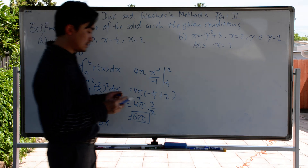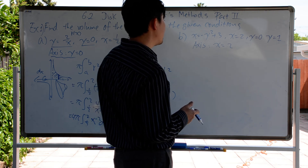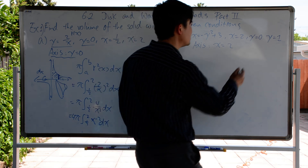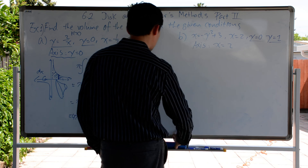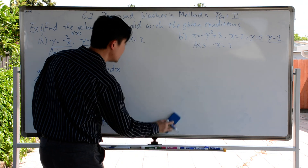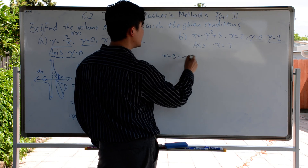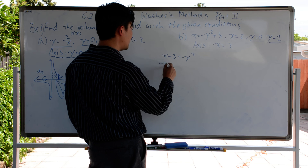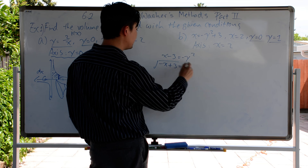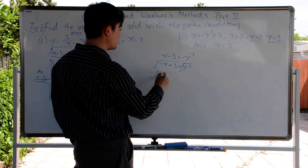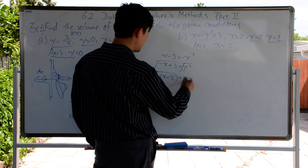Now let's look at the other example. This one is x equals negative y squared plus 3, and x equals 2. It looks like we have the boundary from c to d, and we're using dy for this. Let's sketch the graph first. We have x minus 3 equals negative y squared. Multiplying both sides by negative 1, we get y squared equals negative x plus 3. Taking the square root, we get y equals the square root of negative x minus 3, so it's reflected over the x-axis.